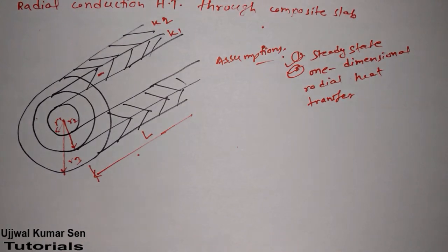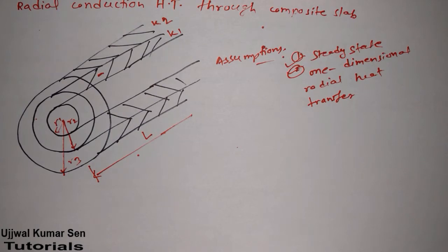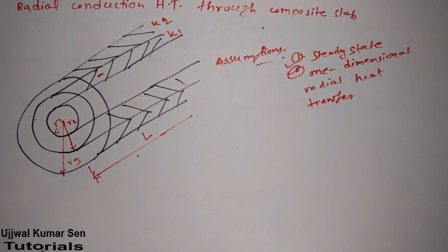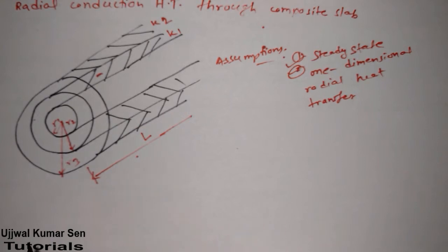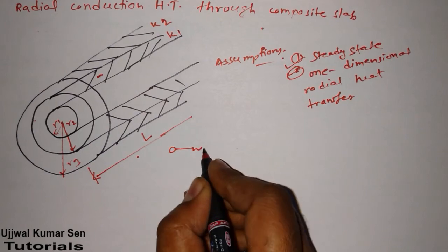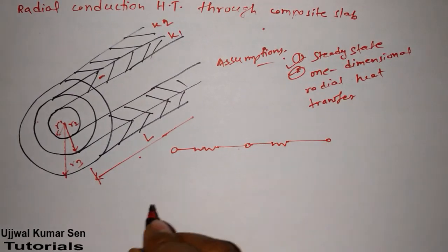Now, as I have already shared with you heat transfer and radial conduction through a hollow cylinder, here we are having a composite cylinder. The most important thing is that we have to know how to draw the thermal circuit diagram. Once we know how to draw that, solving such problems is straightforward. And one good news — after this we will solve a GATE problem related to this topic, giving you a numerical approach along with the theoretical one.